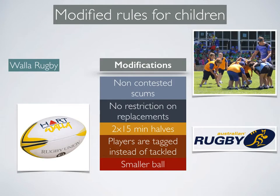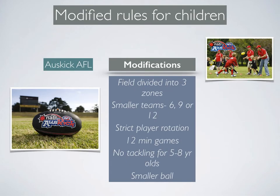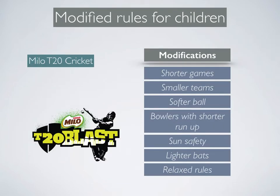Waller Rugby is the Rugby Union version of a modified game, with similar changes to Rugby League. They do have scrums, however, but they are non-contested scrums. They have shorter durations and play with a smaller ball. Likewise, Auskick AFL is another modified game with smaller fields, shorter durations and a smaller ball. Interestingly, they encourage young players to rotate positions regularly and ensure that each player gets a turn playing in different roles to develop their skills.